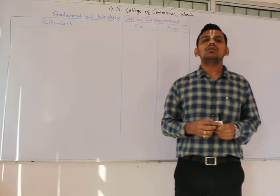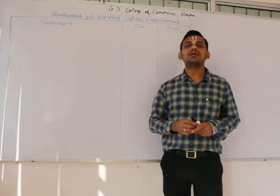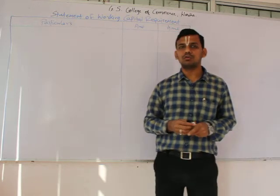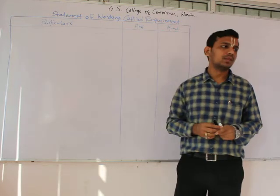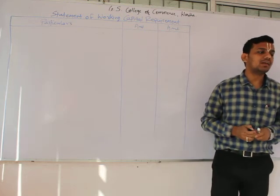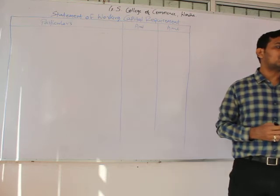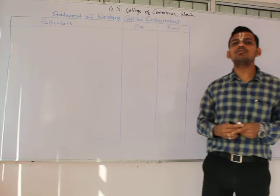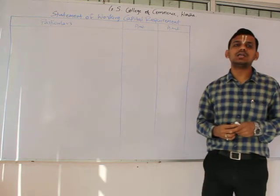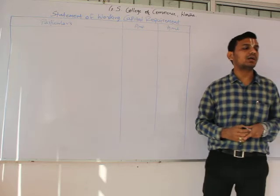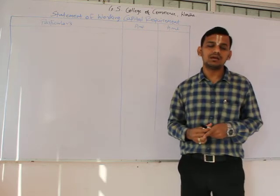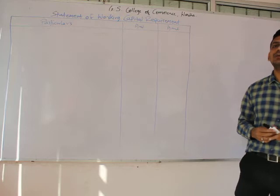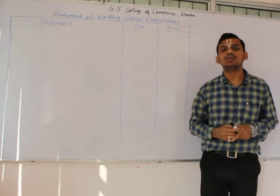The question we are going to take in this particular video is attached in the link provided with the video. Kindly refer to it. The question says that the company has an annual sales of 85 lakhs with a profit margin of 25% on its cost, and conditions of supplier, debtor, and other things are provided. We are asked to prepare the working capital requirement statement to ascertain the working capital of the company.